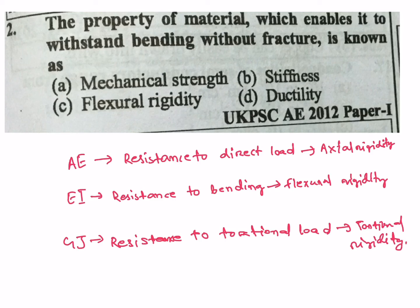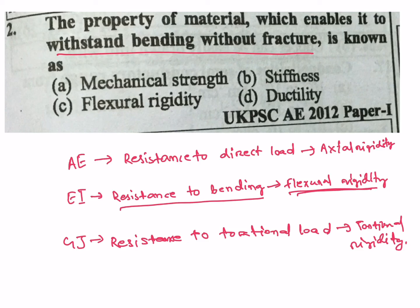The question asks which property enables withstanding bending without fracture — resistance to bending is flexural rigidity. From the options: mechanical strength, stiffness, flexural rigidity, ductility — C is the correct answer.